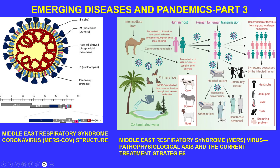Looking at pathophysiological aspects and current treatment strategies — the transmission of the virus came from camels through consumption of their meat or milk. Some tourists in the Middle East would ride camels and drink raw camel milk, and that's how they got the zoonotic transmission from camel to human.